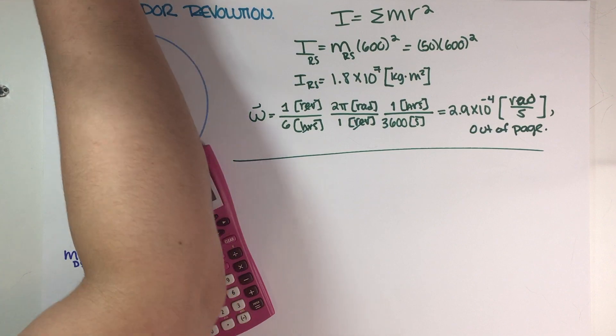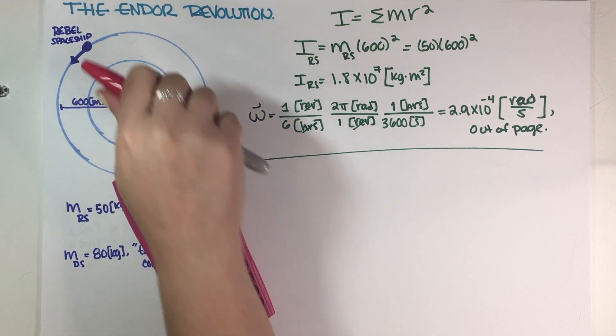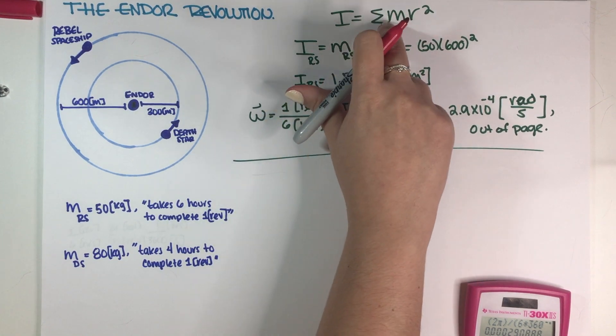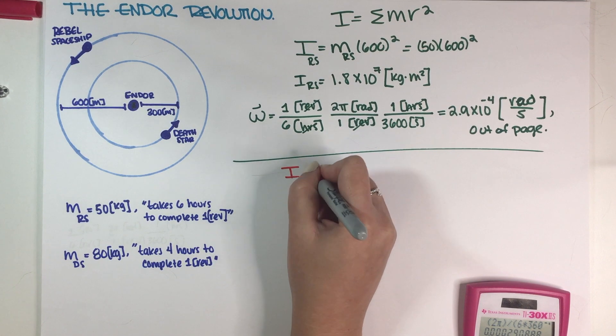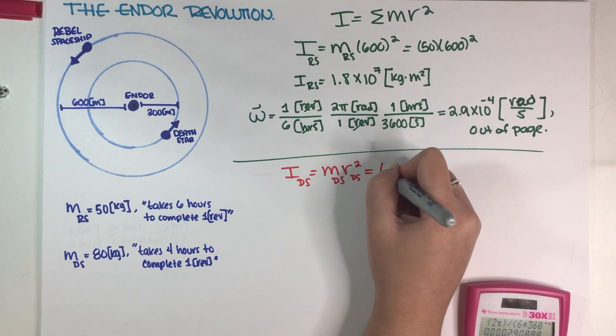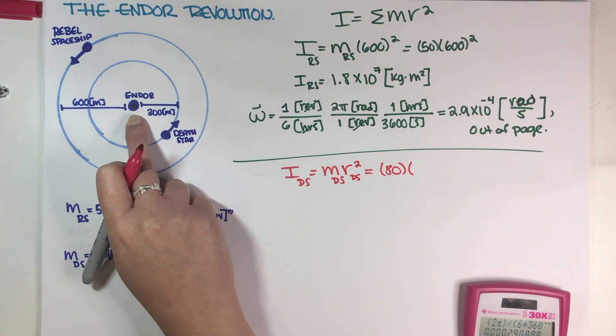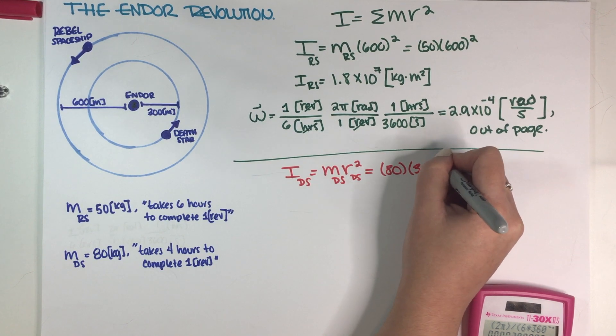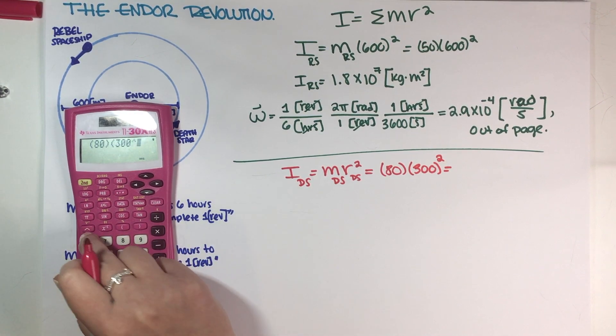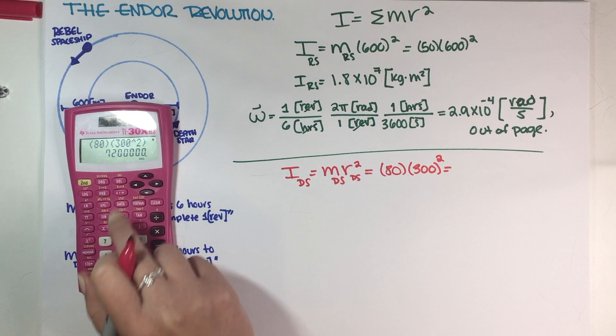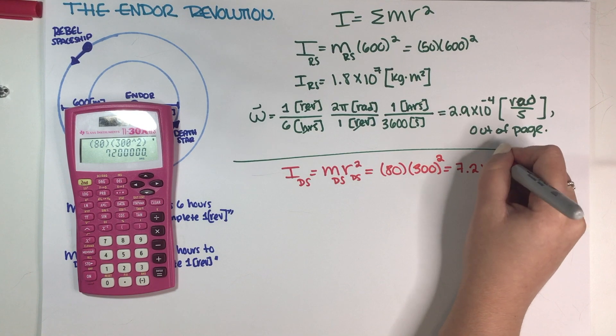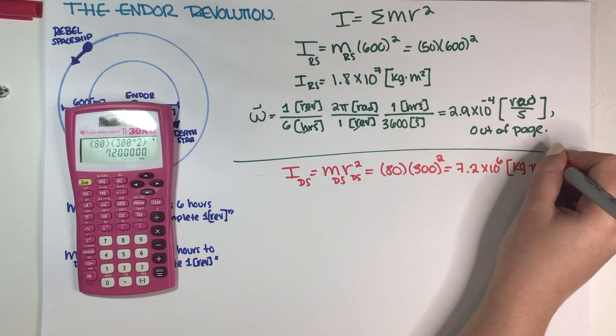The second half of the problem is the exact same two questions, but now for the Death Star. The first thing that we have to figure out is the moment of inertia of the Death Star. I'm going to use this equation, but now I'm going to use the respective mass and radius. The mass here is 80 kilograms, the radius now is 300 meters, and I need to not forget to square this. So 80 kilograms, 300 squared, that gives me 7.2 times 10 to the 6 kilograms times meters squared, final answer.